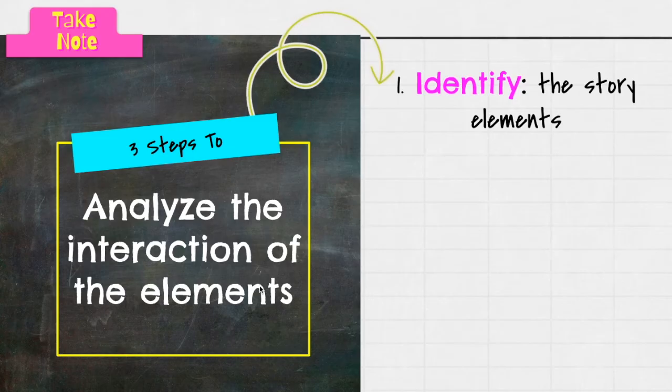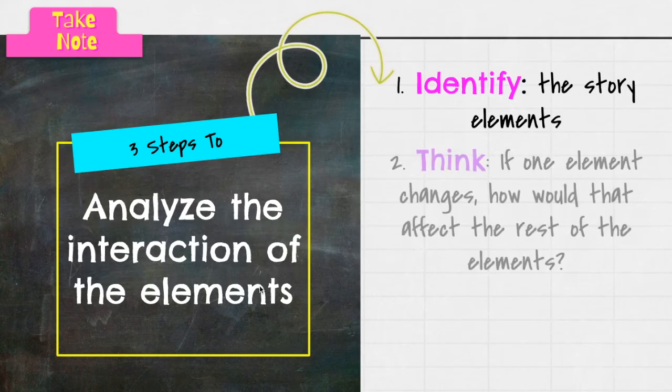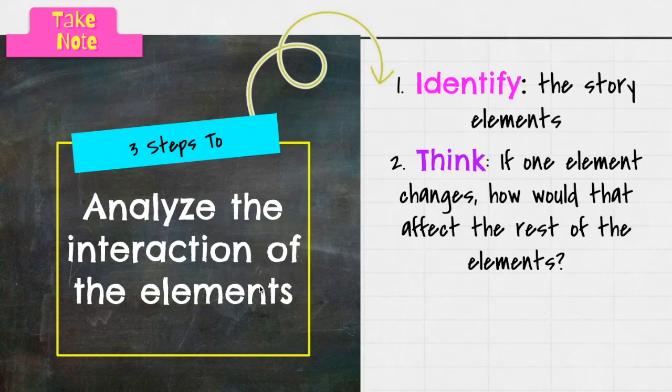Second, think: if one of the elements changes, how would that affect the rest of the elements? So if the setting is no longer in the 1800s but instead modern day, how would that change the story? Or if the theme changed, how would that change the character's actions in the plot or the conflict? If the conflict was different, how would that change the character traits? It's kind of fun when you start thinking about all of your different what-if activities or what-if scenarios, because if you change one little thing, it could change the whole story.